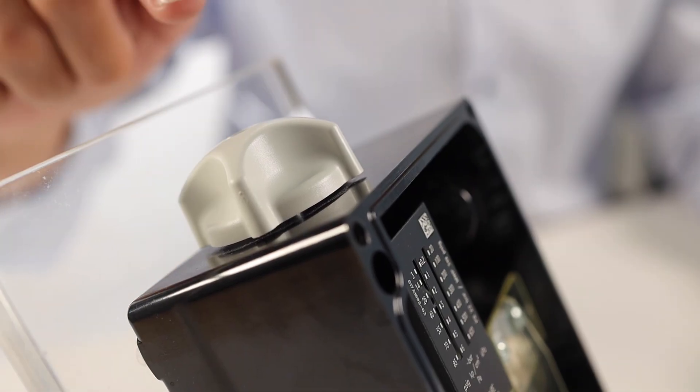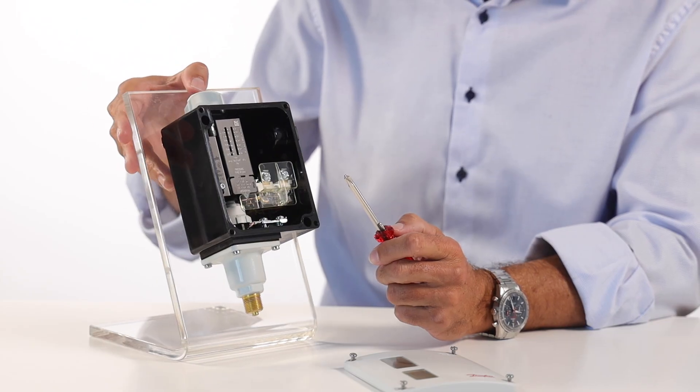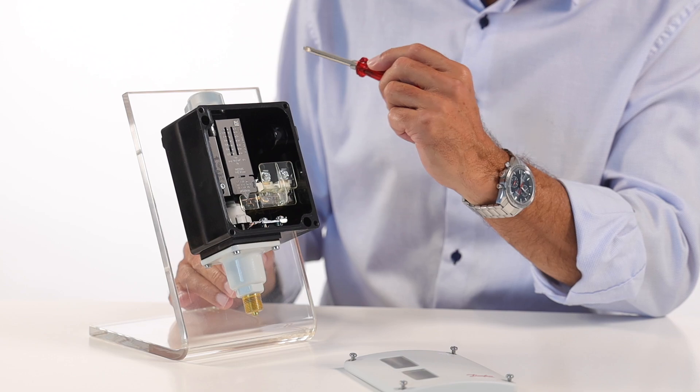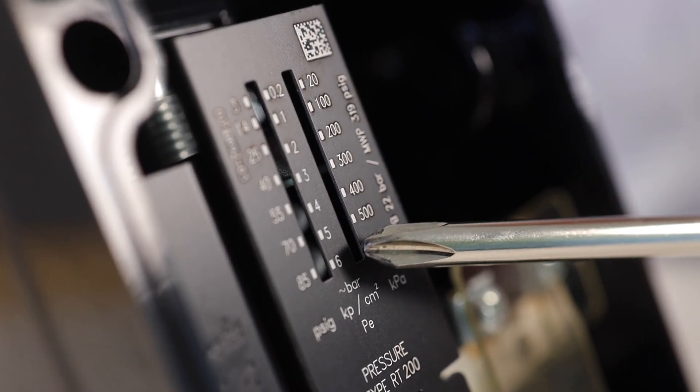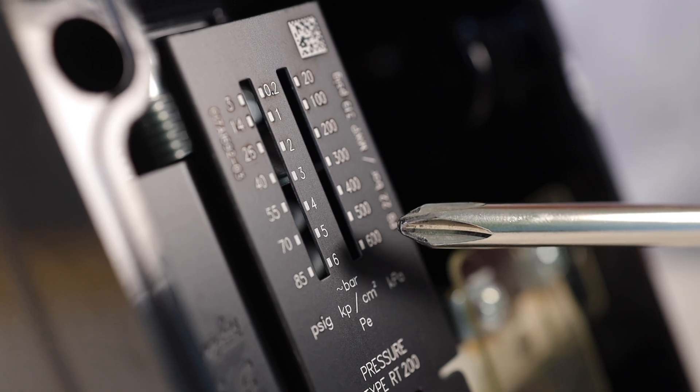At the top, you have the setting knob. The range is set using the setting knob. RT200 covers the range from 0.2 to 6 bar. In this example, we will set the level to 3 bar.